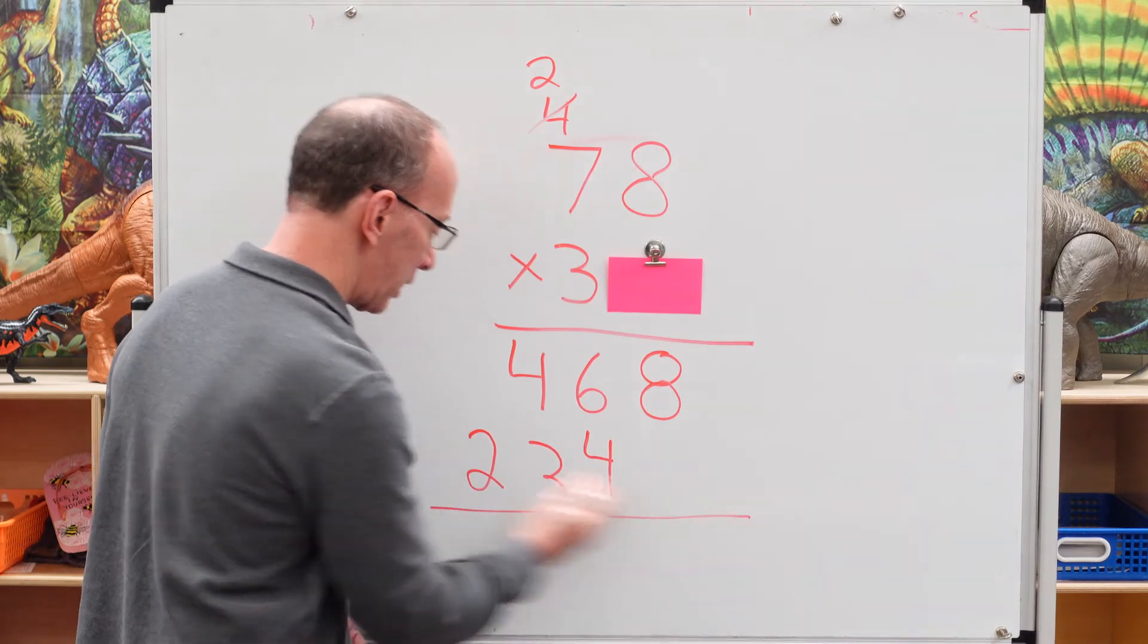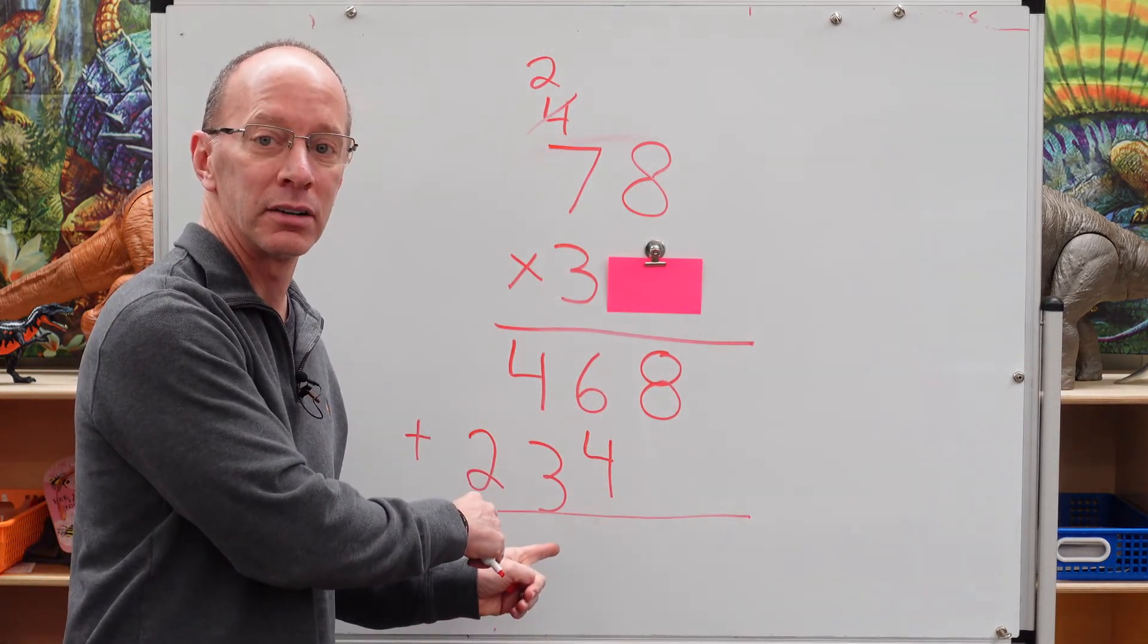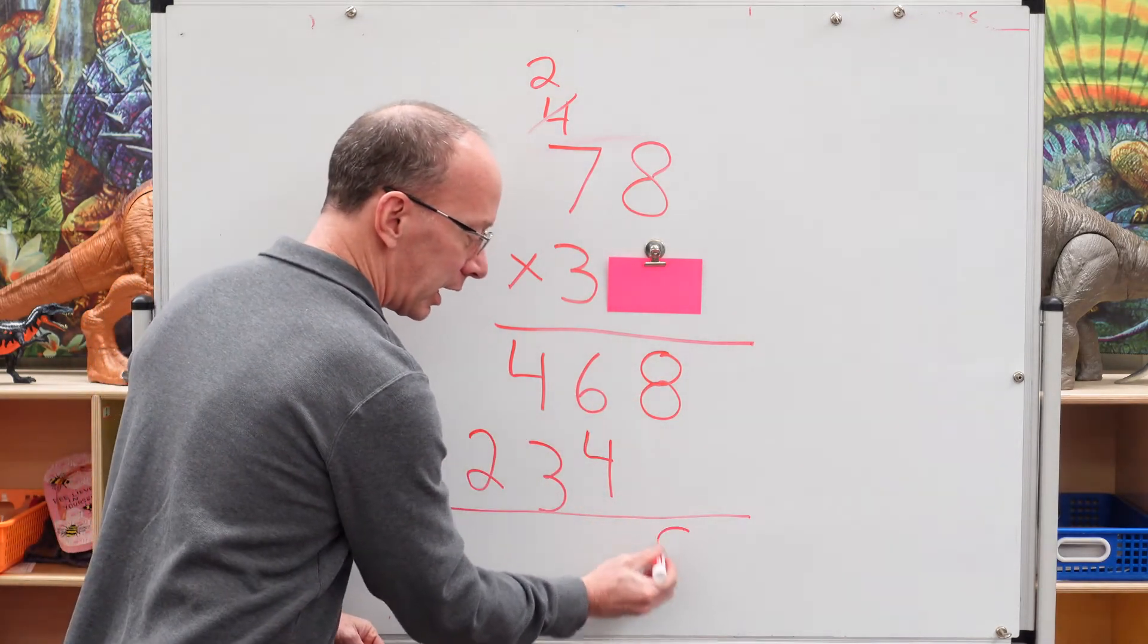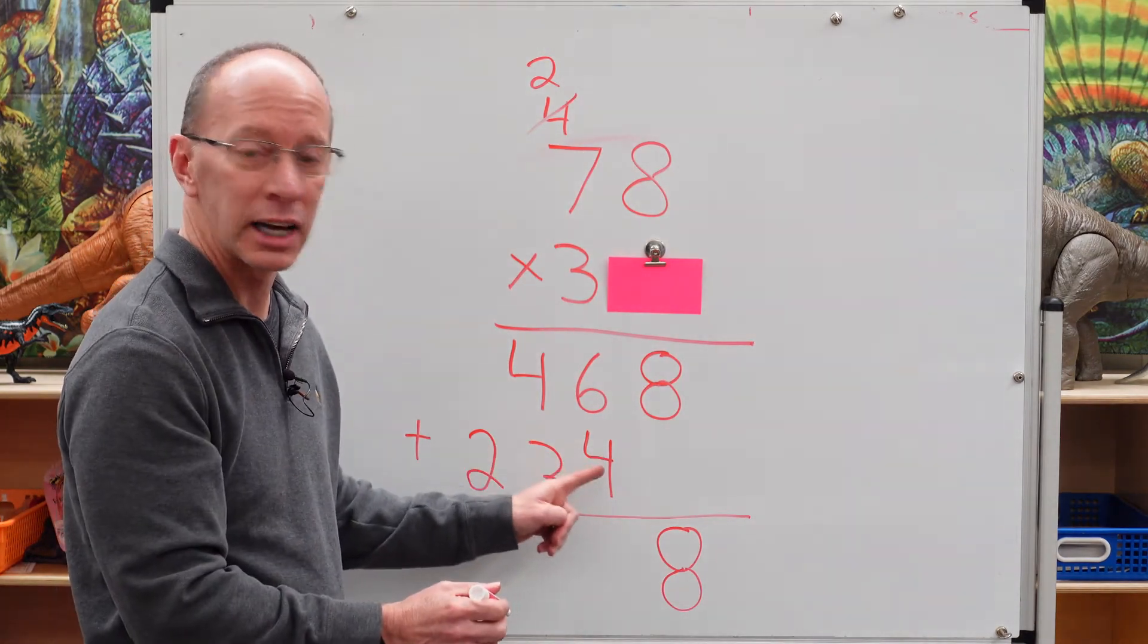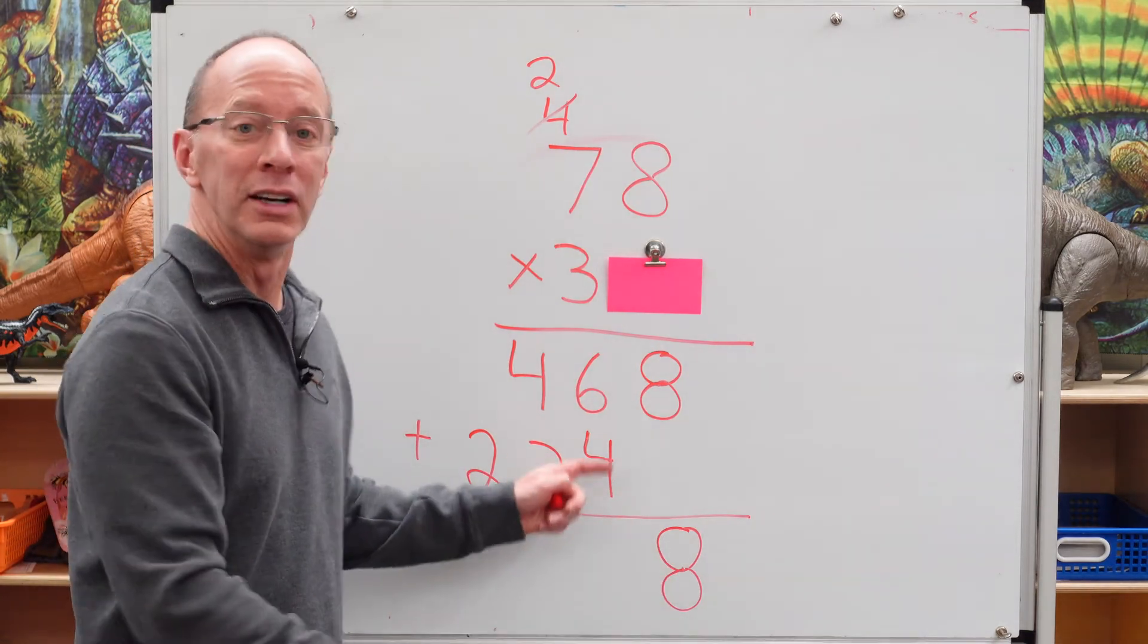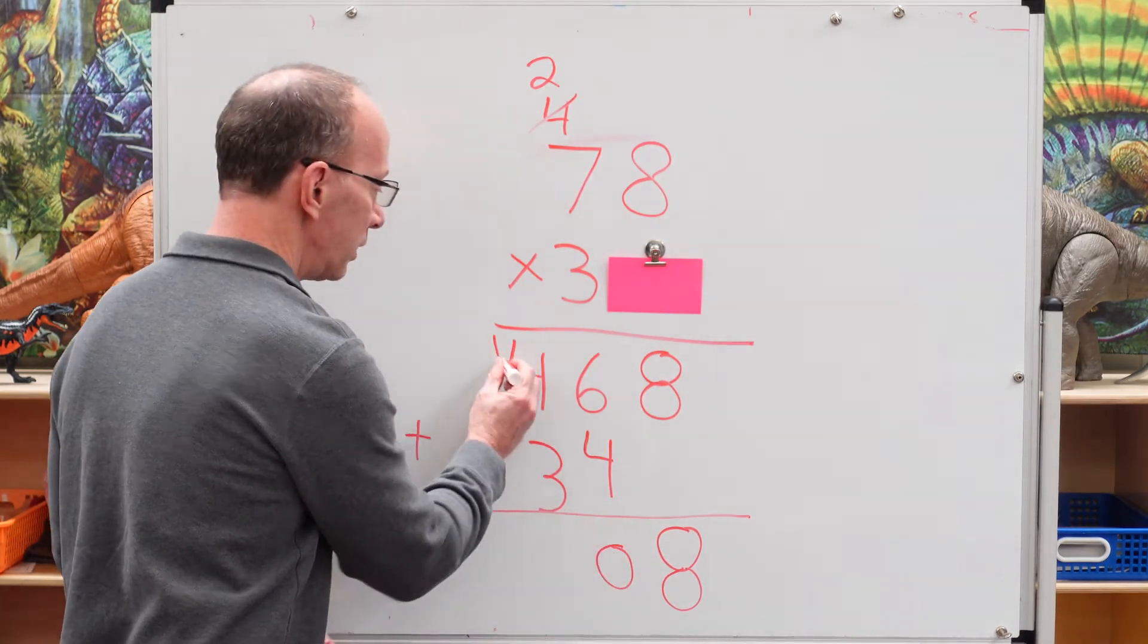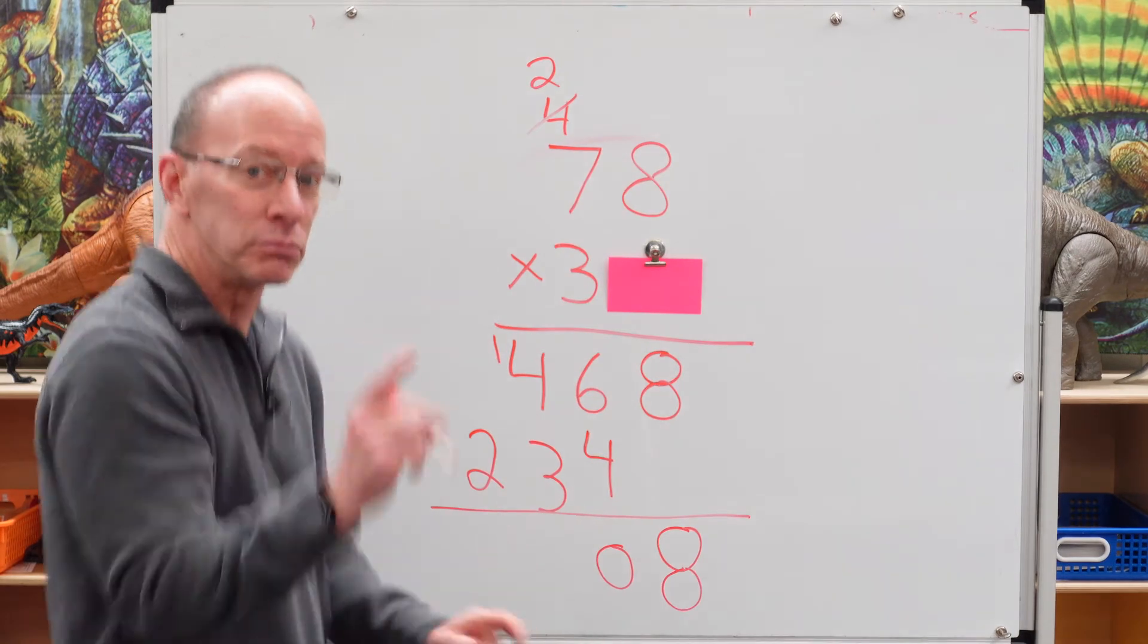Put a line up there. And we're going to add these numbers right here. Okay. 8. Bring it down. We got an 8 right here. And now, 6 plus 4, 10. Carry the 1. 4 plus 3 plus 1, 8. Don't be late.